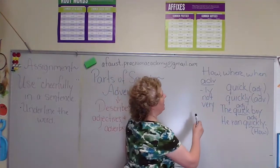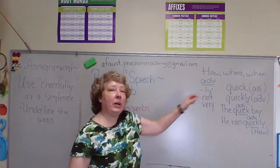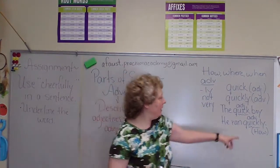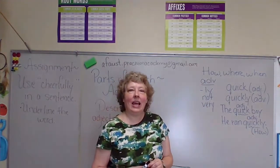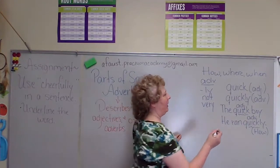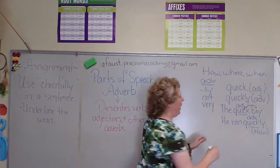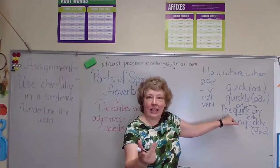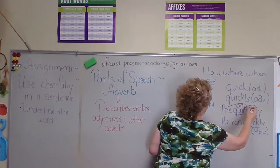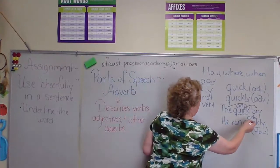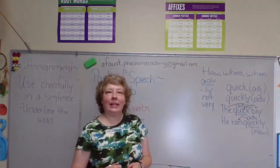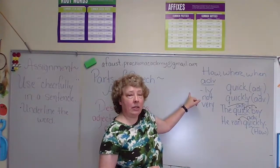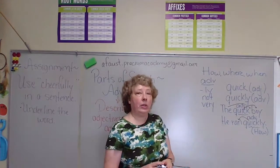Now I add an -ly to quick and it becomes an adverb. Example: 'He ran quickly.' How did he run? Quickly. Exactly. So let's look at it this way: quick goes to boy. By the way, what is T-H-E? It's one of those three — a, an, the — it's an adjective. How did he run? Quickly describes 'ran.' So be aware: sometimes when you add -ly, you'll end up with an adverb, but there are exceptions.